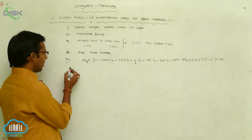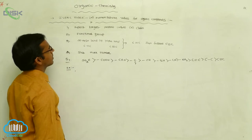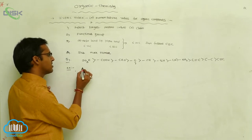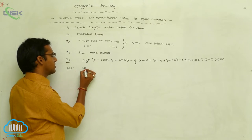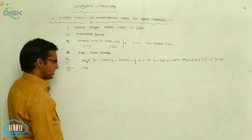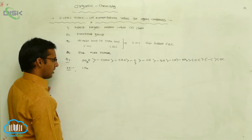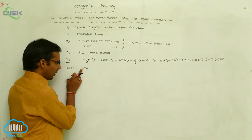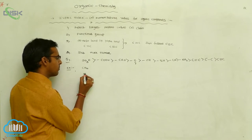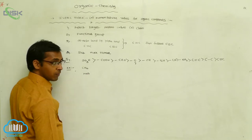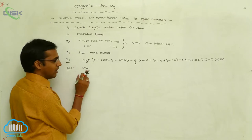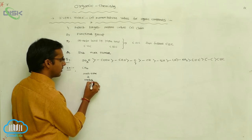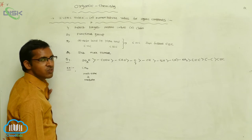Now let's look at examples for IUPAC nomenclature of organic compounds. Consider CH₄: how many carbons are present? One carbon. The functional group is absent. One carbon means the root word is 'meth', and all carbons are saturated, so the suffix is '-ane'. The IUPAC name is methane — this is your alkane.